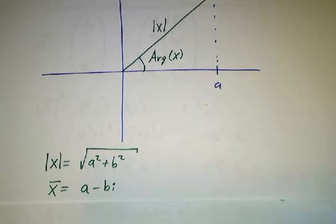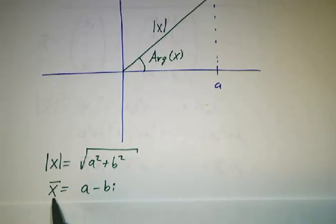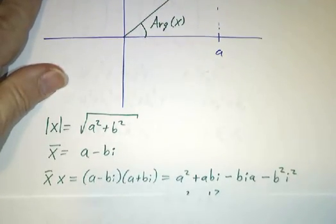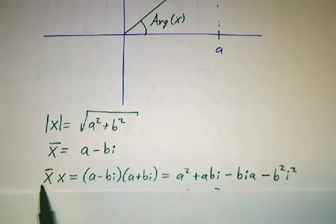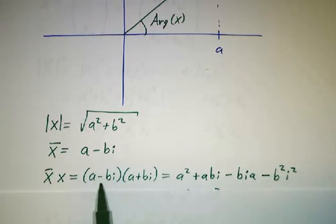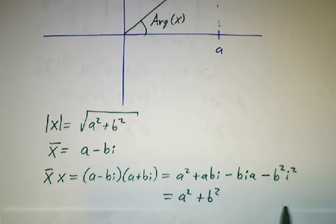A useful quantity to look at is the complex conjugate of x. The complex conjugate is just the same number, only you flip the sign of the imaginary part. Instead of taking a plus bi, you take a minus bi. And you notice that if you multiply the conjugate x-bar by x, a minus bi times a plus bi, you FOIL it. First is a squared, outside is abi, inside is minus bia, and last is minus b squared i squared. These two terms cancel, i squared is negative one, and you get a squared plus b squared.